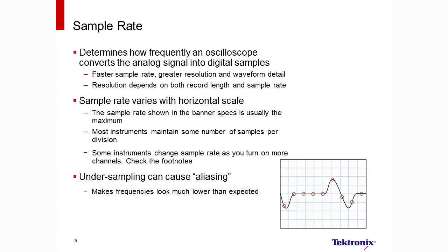Sample rate is an important spec because most scopes today are digital sampling oscilloscopes. They convert analog signals into digital values, and the rate at which they do it is the sample rate. It's given in samples per second. In general, the faster the scope can sample, the less information you'll lose and the better the scope will be able to represent the signal under test. But the faster you sample, the faster you fill up your memory, so this limits the amount of time you can capture.